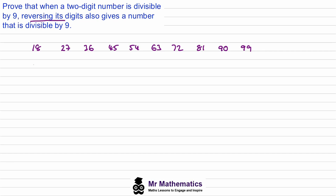Now if we reverse each of these digits we get 81, 72, 63, 54, 45, 36, 27, 18, and then 09 — which is just 9 — and 99.